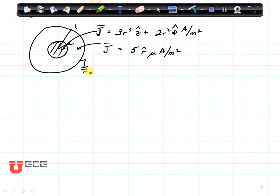It is also conducting a small current from the inner to the outer conductor, that is 5 r-hat microamps per meter squared. We want to find the magnetic field inside all of the regions of this conductor.